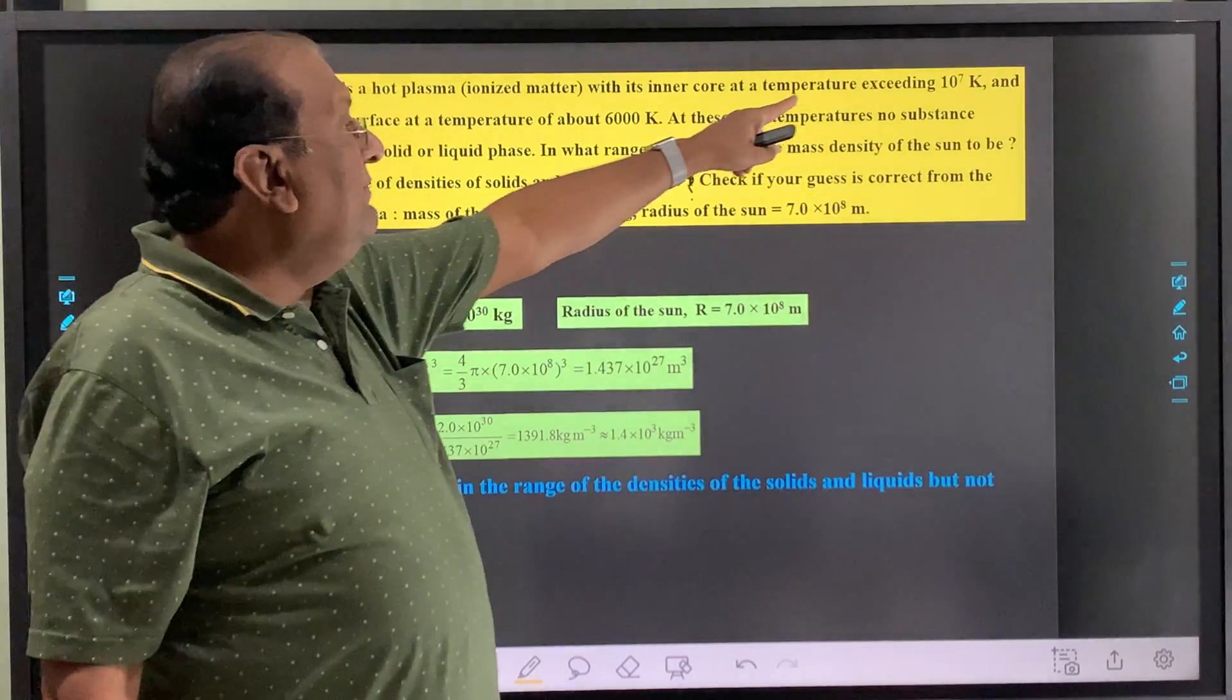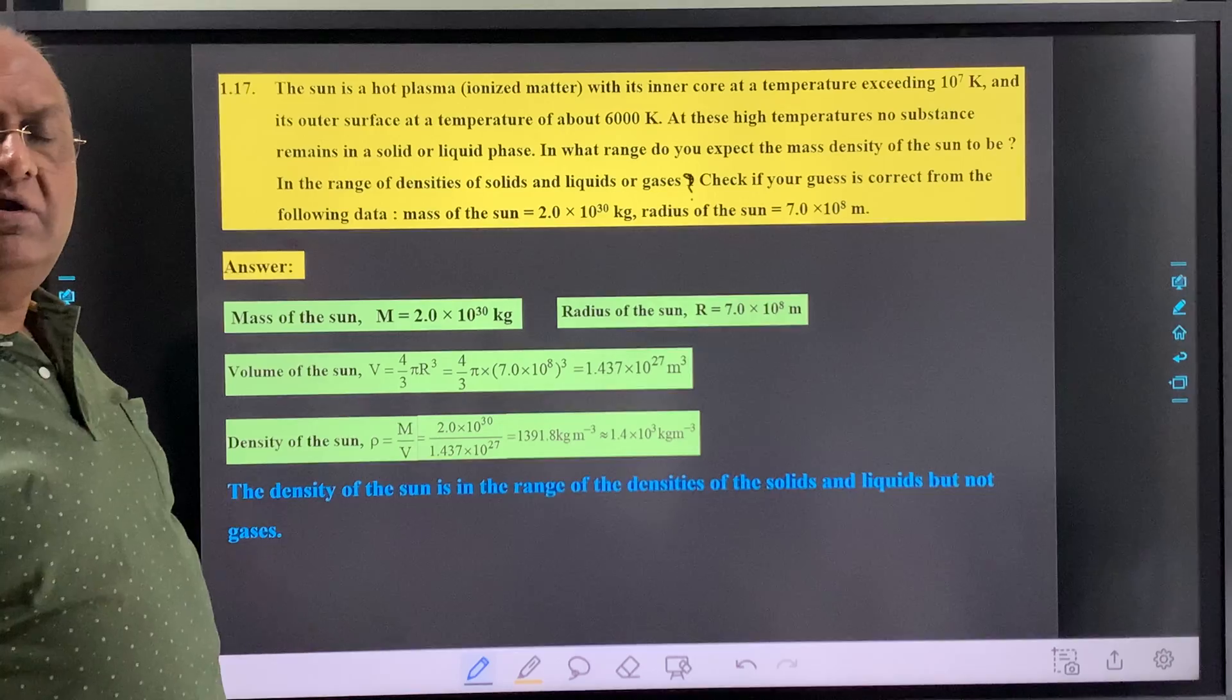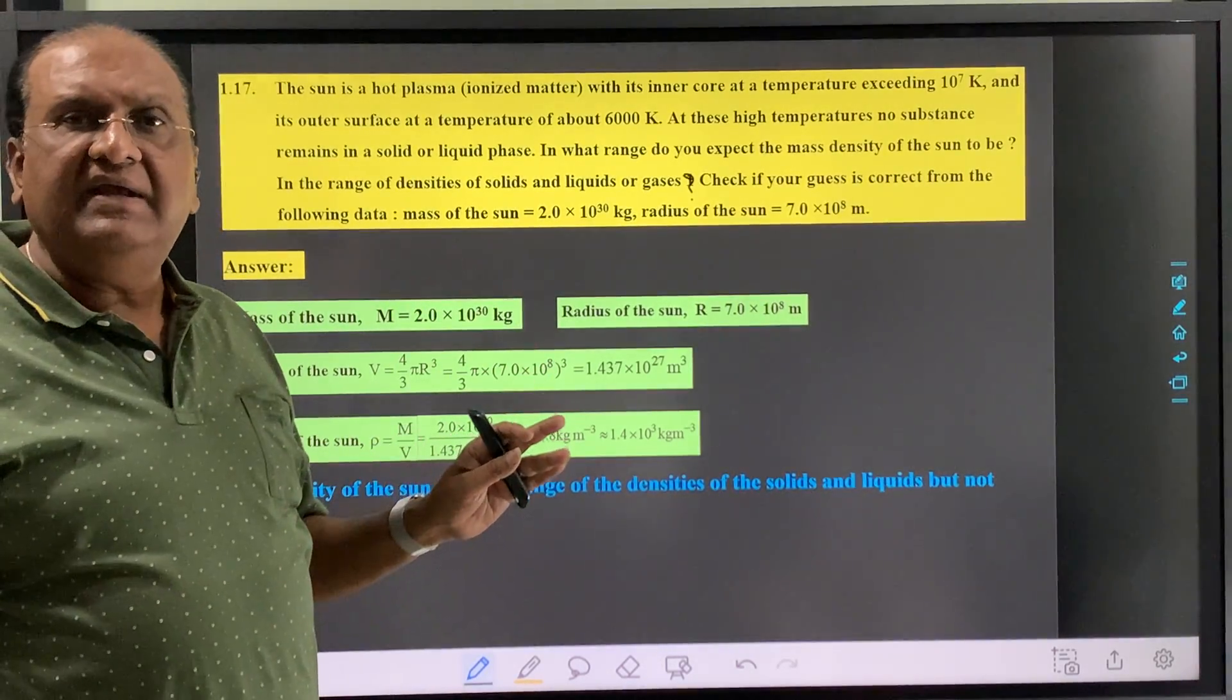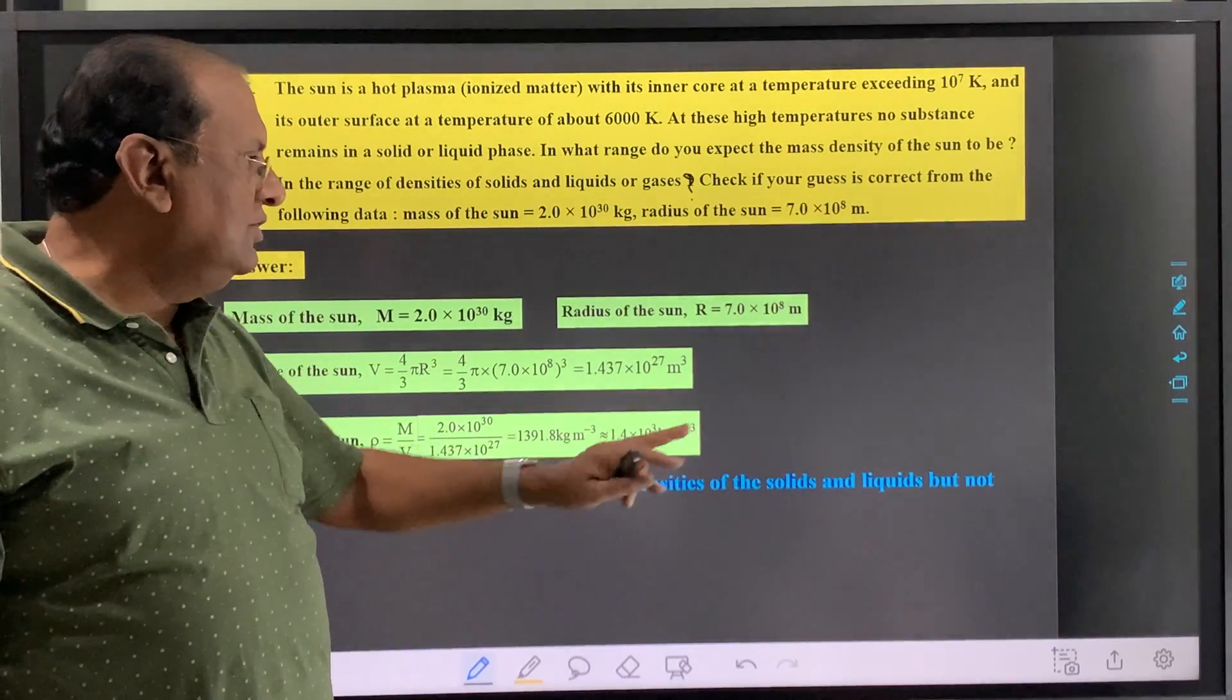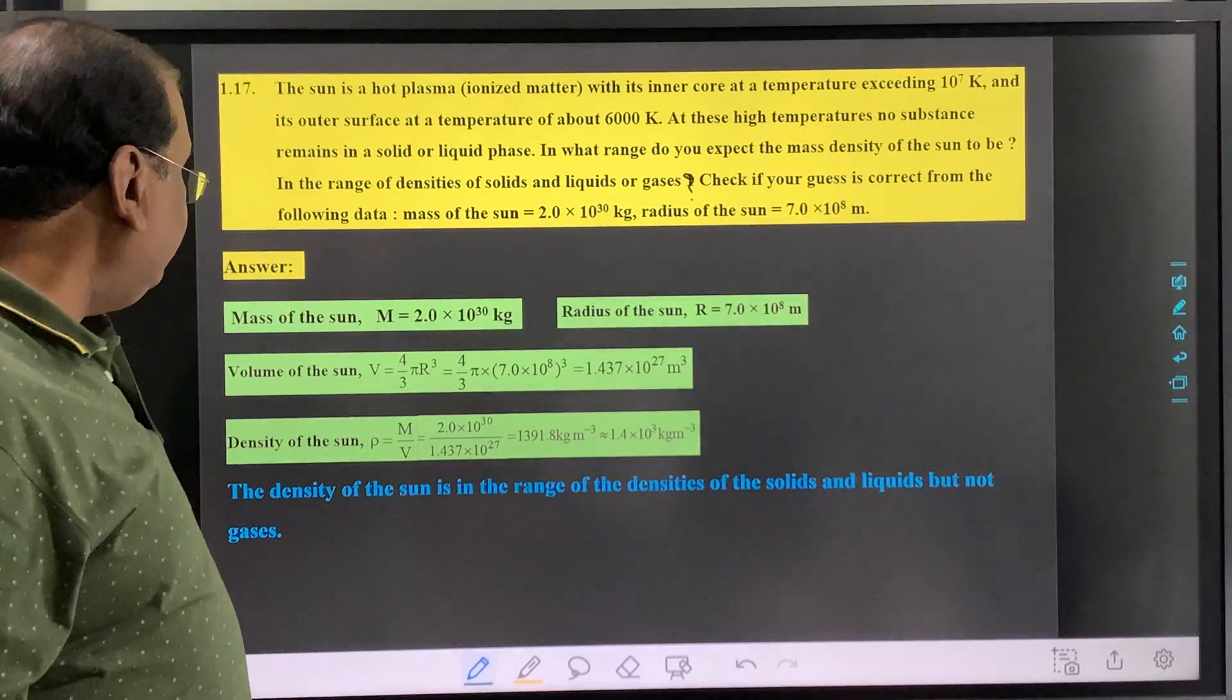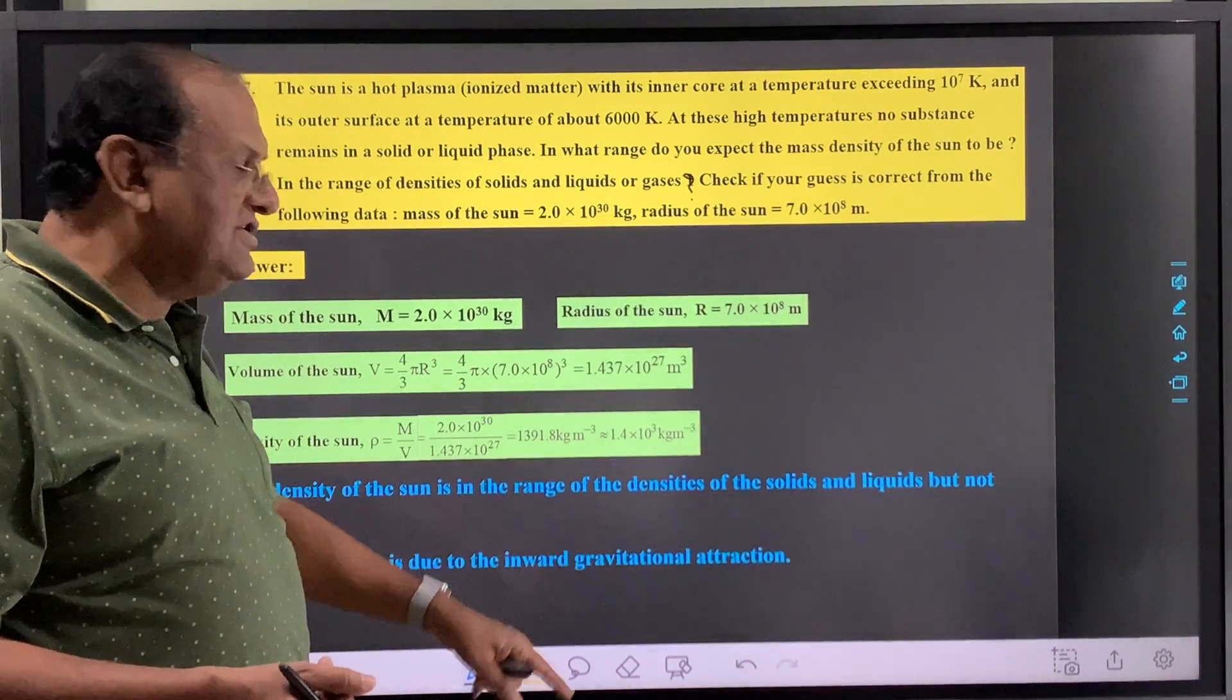The temperature is very high, so all the materials in the sun are in the gaseous state. But the density is in the range of solid or liquid because of high pressure. The high density is due to inward gravitational attraction.